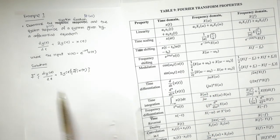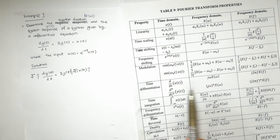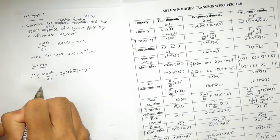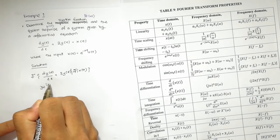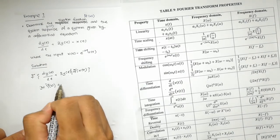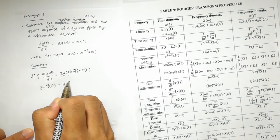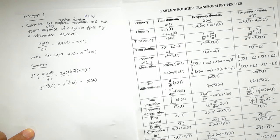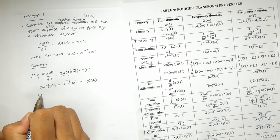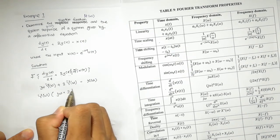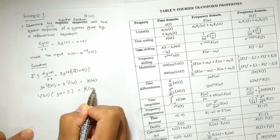For this first-order case, the Fourier Transform of dY(t)/dt gives jω · Y(ω). The Fourier Transform of 3Y(t) gives 3Y(ω). So the Fourier Transform of the right side gives X(ω). Combining, we get: jω · Y(ω) + 3Y(ω) = X(ω). We can factorize this as Y(ω) · (jω + 3) = X(ω).